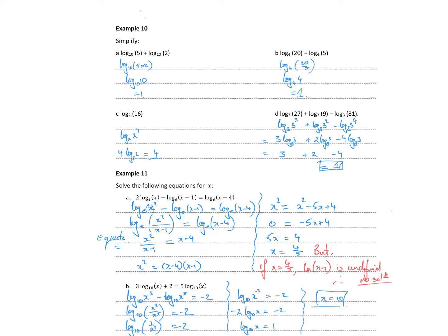Let's apply some of our log laws to simplify these expressions. The key is to remember that everything has to be about the same base. They're both base 10, so log base 10 of 5 plus log base 10 of 2 — we multiply the numbers to get log base 10 of 10, which is just 1. Similarly, if the bases are the same and we're dividing, log base 4 of 20 divided by log base 4 of 5 is log base 4 of 4.